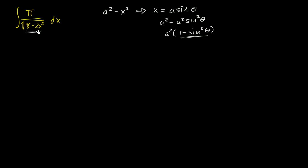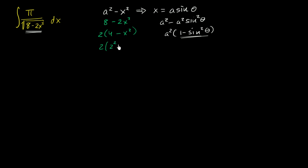Now you're probably saying, well, this 8 minus 2x squared — it's not as obvious that it's a squared minus x squared. But we could simplify this, or write it in a way that it starts to have this pattern. You can rewrite 8 minus 2x squared — if we factor out a 2 — as 2 times 4 minus x squared. And now this very clearly has the pattern a squared minus x squared. You could write this as 2 times 2 squared minus x squared. So in this case, a would be equal to 2.